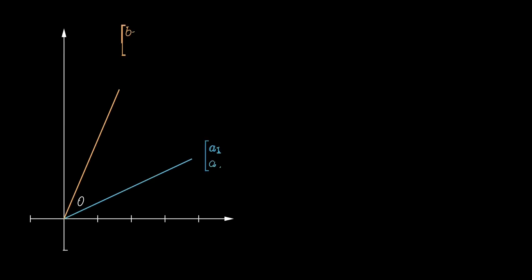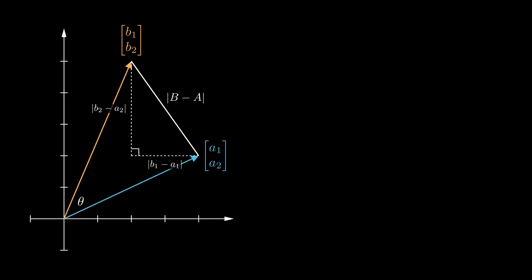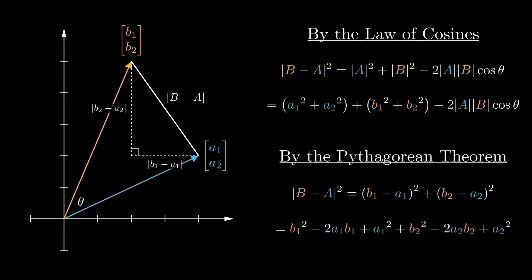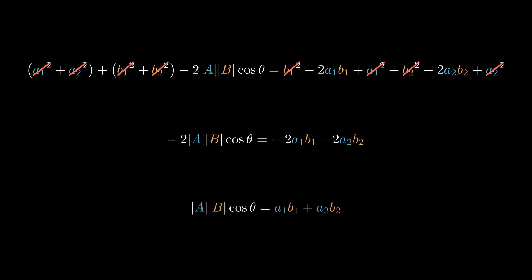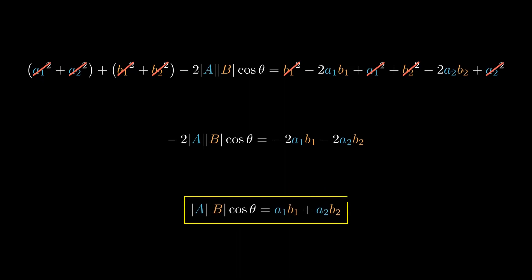If we draw two vectors in the plane, a and b, with coordinates a1, a2 and b1, b2 respectively, then we can express the length of the line segment connecting the endpoints of these two vectors in two different ways. Setting these equal to each other and simplifying, we see that our two expressions for the dot product are indeed equal in 2D space, and the same method generalizes to higher dimensions as well.